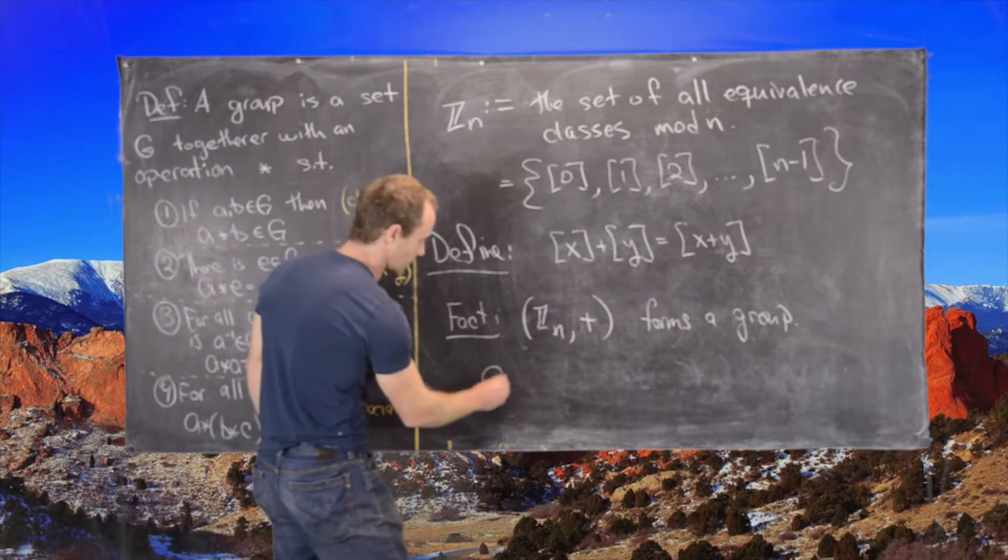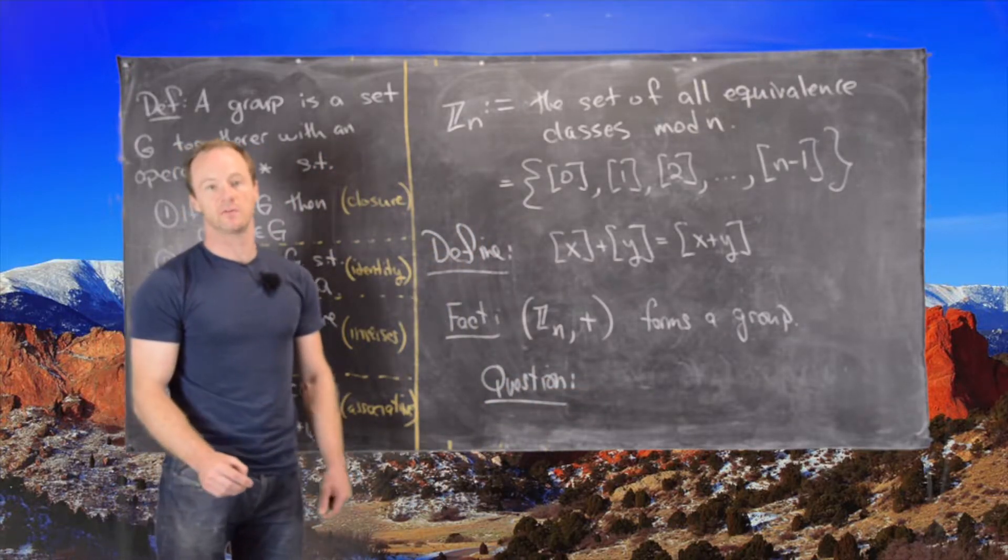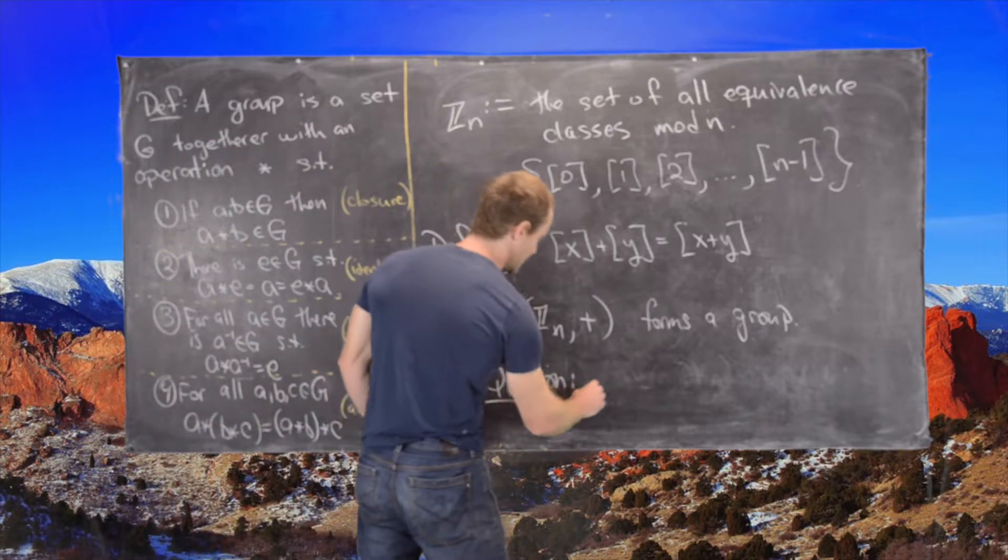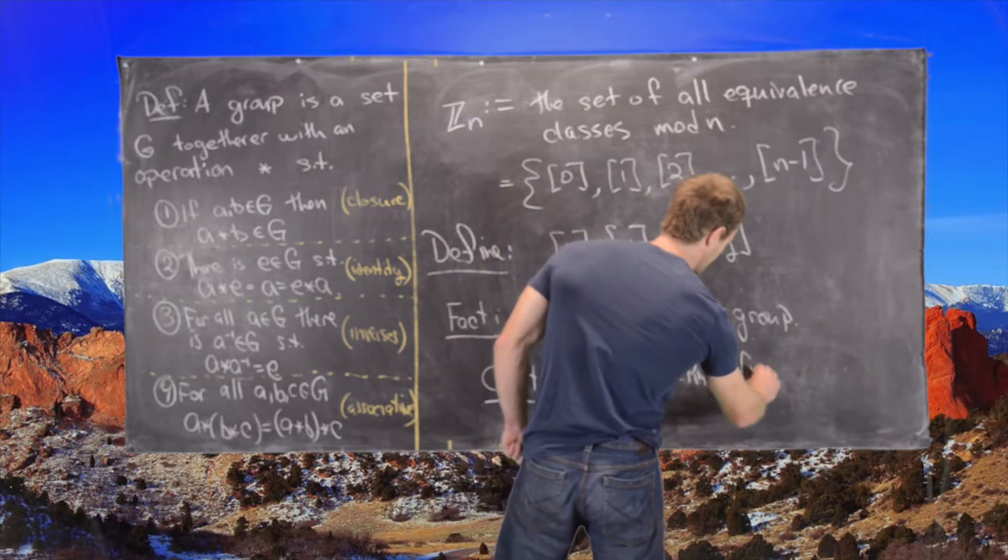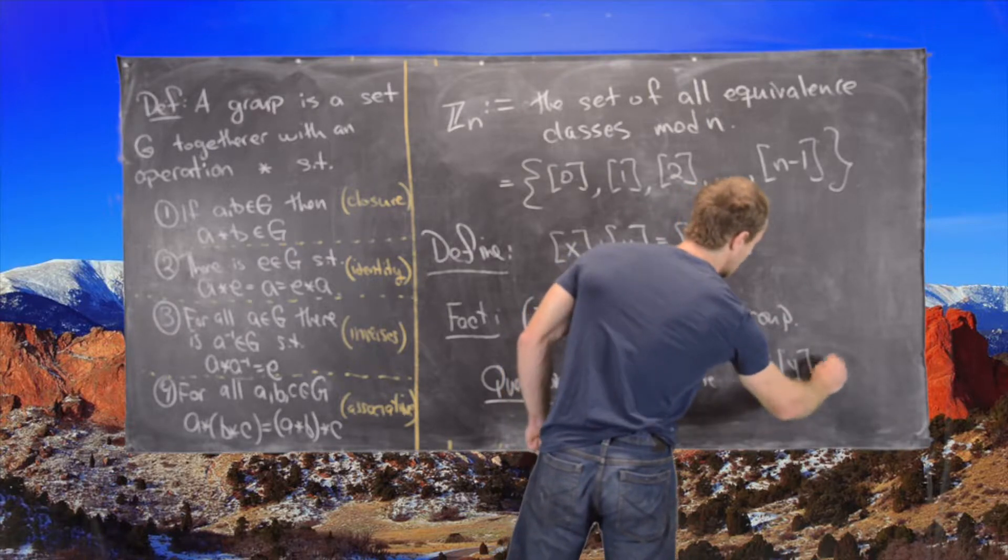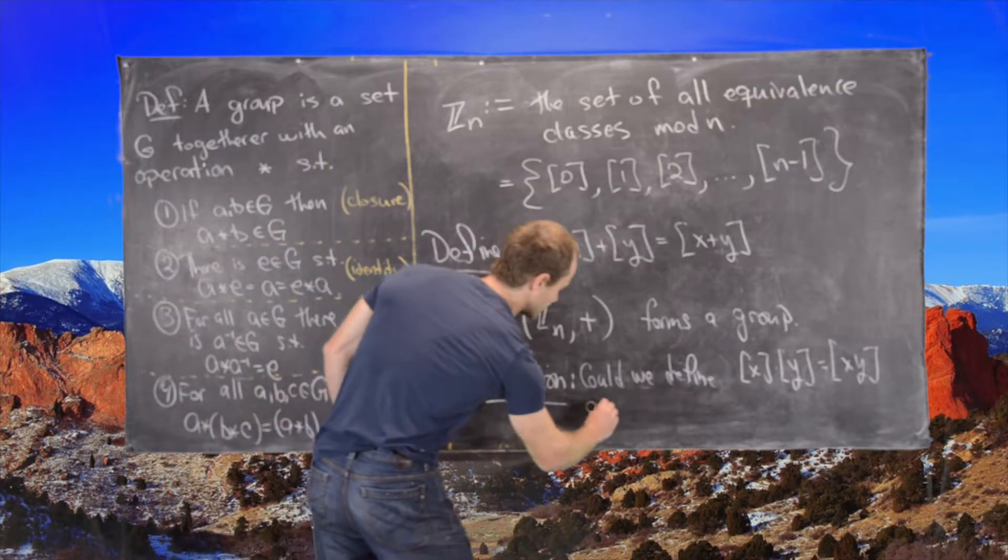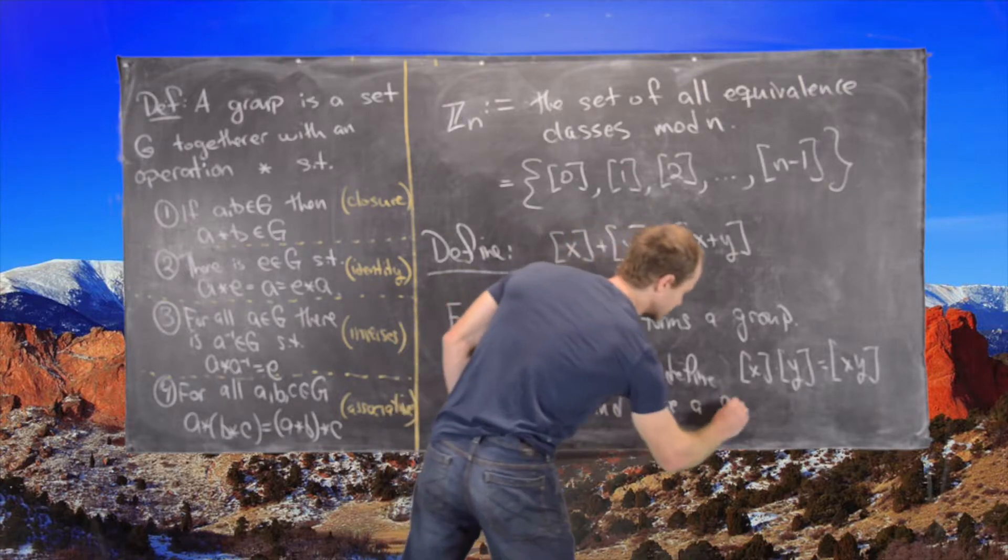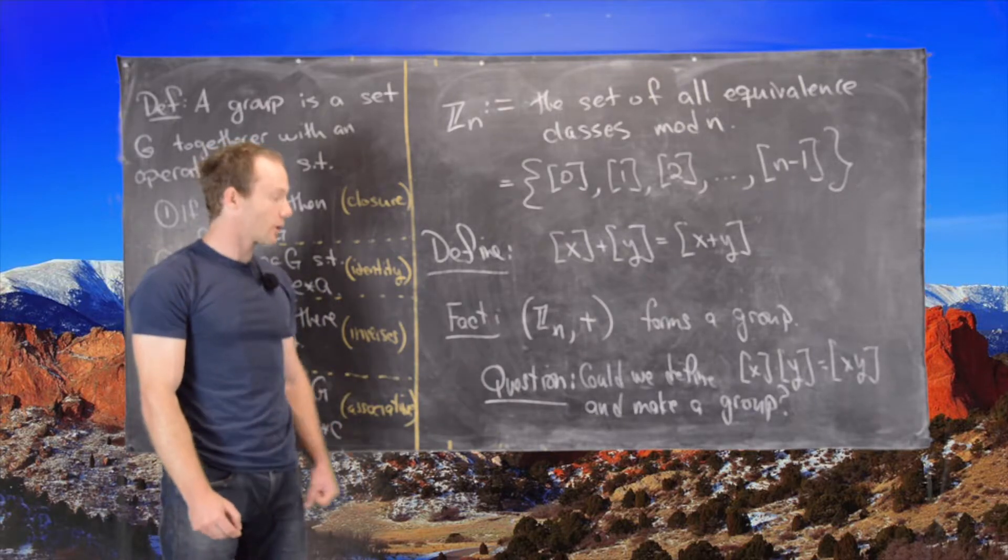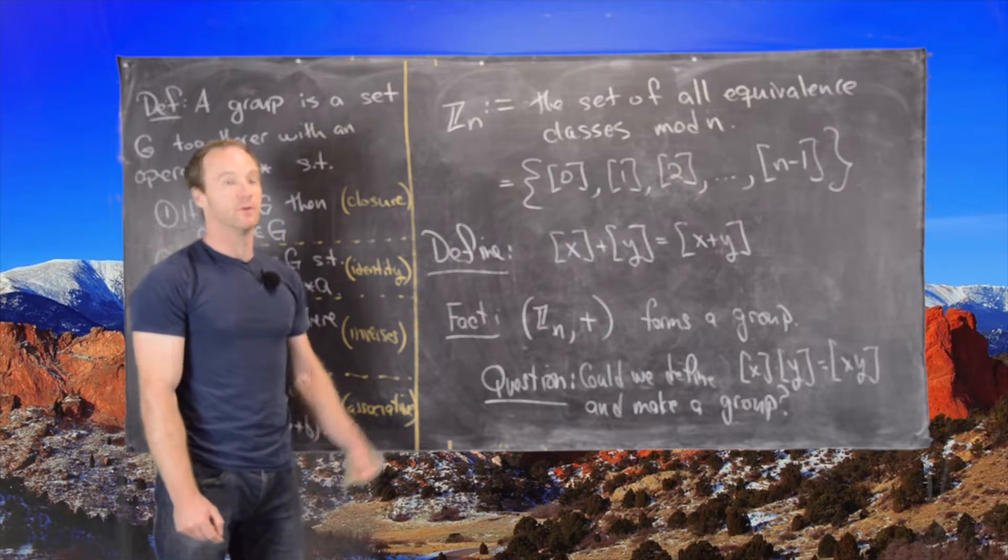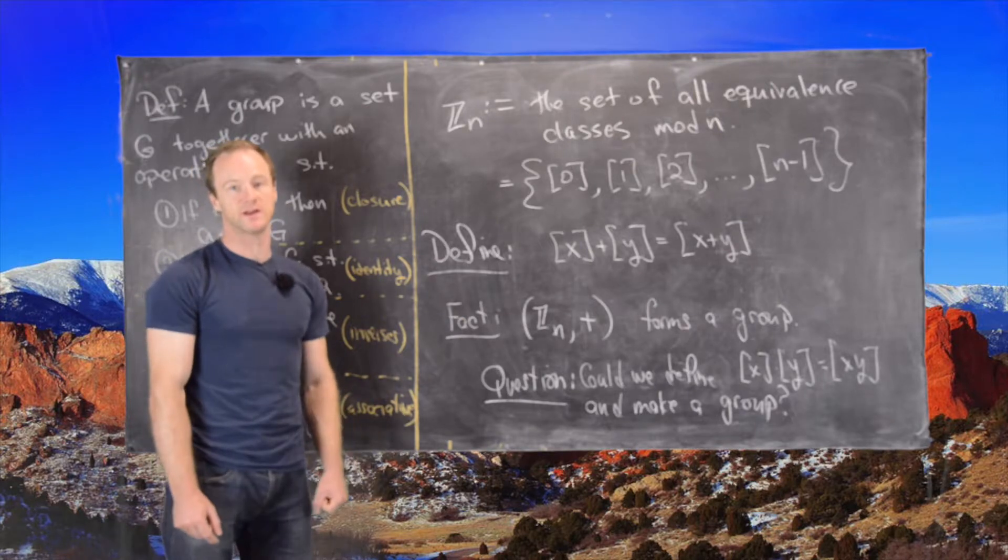And so maybe that brings us to a question which we'll look at as we finish this video and we'll look at it more carefully in another video: could we define X times Y equals the equivalence class of XY and make a group? So we won't totally answer that question this time, but we will in a subsequent video. So I'll erase this board and then we'll look a little bit more about this group Z_N plus.